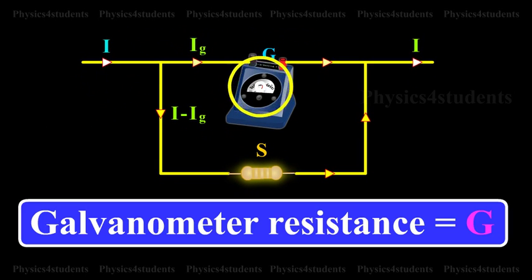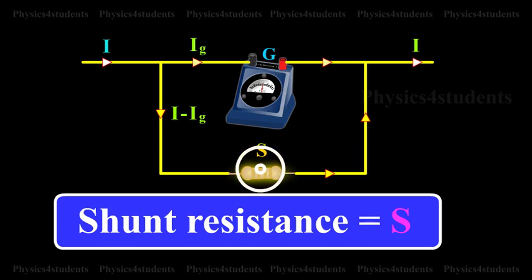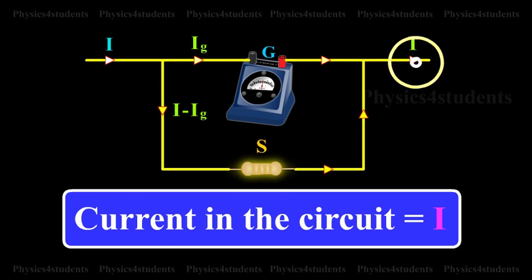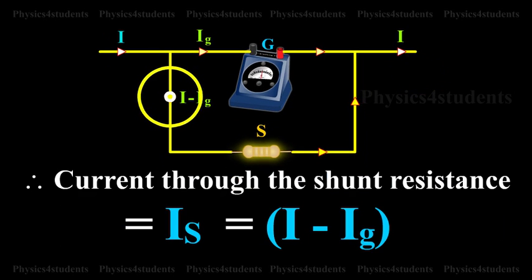Galvanometer resistance is equal to G. Shunt resistance is equal to S. Current in the circuit is equal to I. Current through the shunt resistance IS is equal to I minus IG.